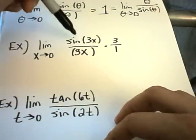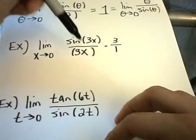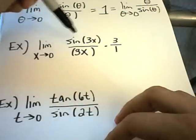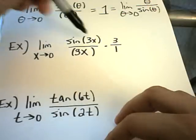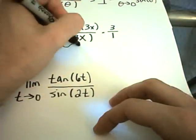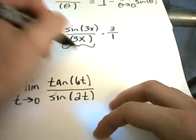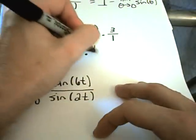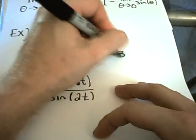And now I can use this identity on it, this limit result. It says I have the same thing next to sine, the same thing on the bottom. The stuff on the inside as x approaches 0, this is certainly going to 0. It turns out that this whole limit is 1, and I still have to multiply that by 3, so my solution will be 3.